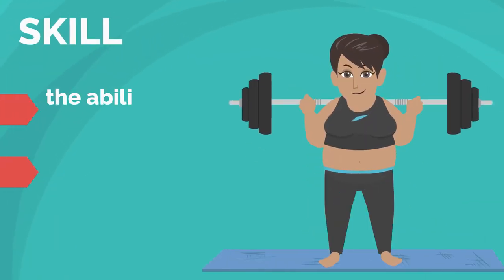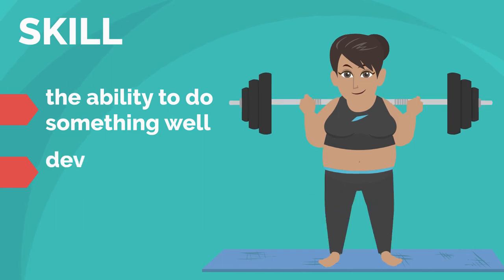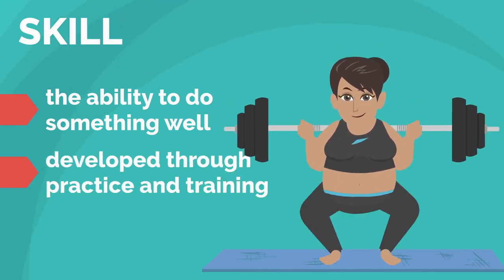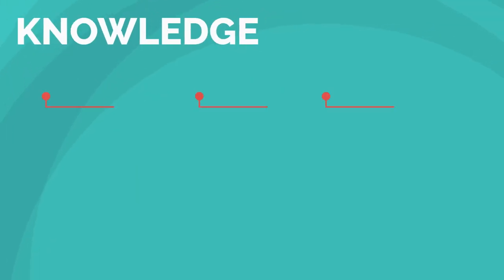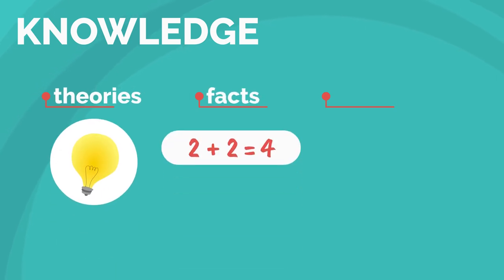A skill is the ability to do something well and is usually developed through practice and training. Knowledge is information of which you are aware, including theories, facts, and procedures.